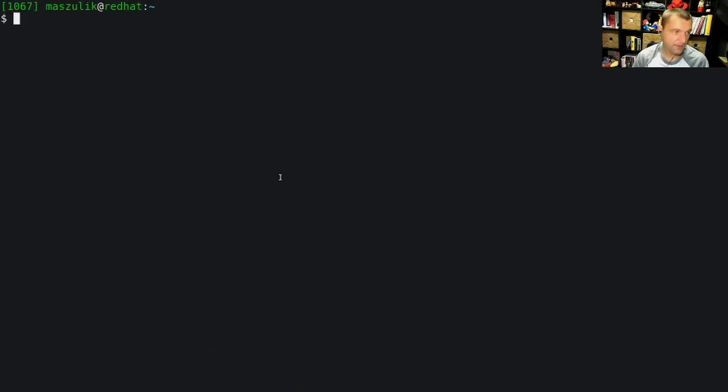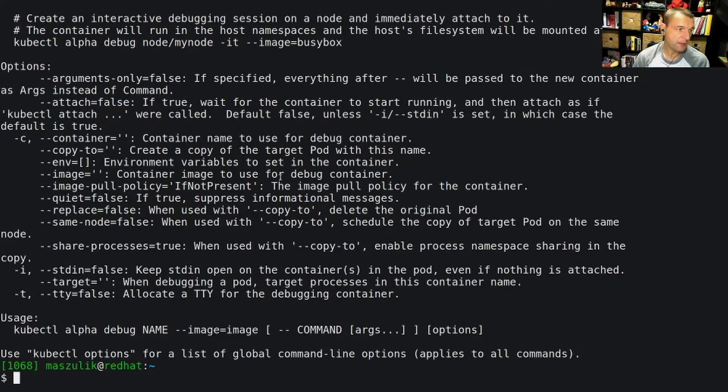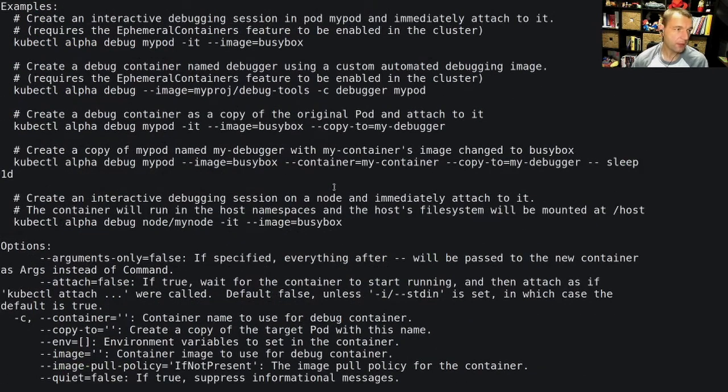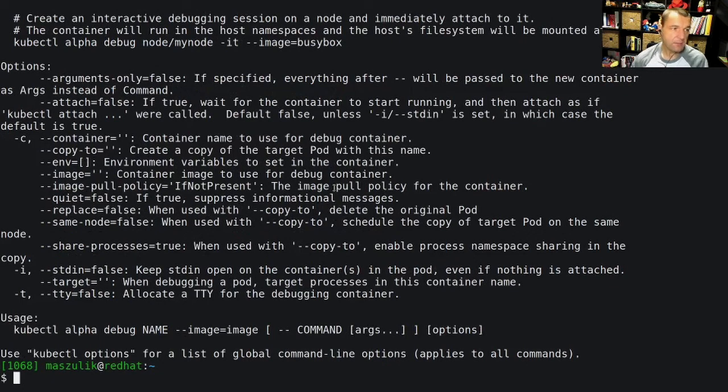As a final example, there is a new alpha command that we are hoping to promote to beta in 1.20: kubectl debug. Debug allows debugging your application, and best to learn all its possibilities and capabilities is by giving it a try. So happy debugging. Thank you very much for your time. And now we're going to answer some of your questions.